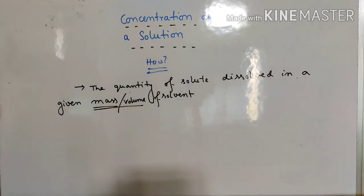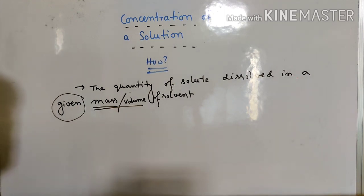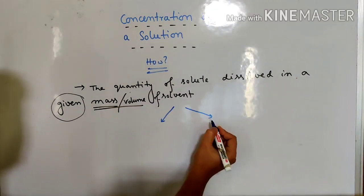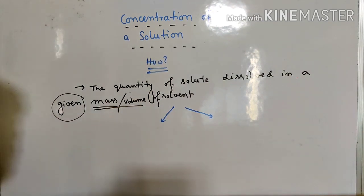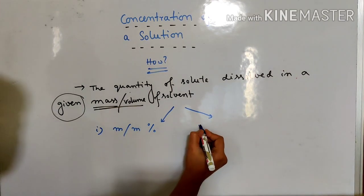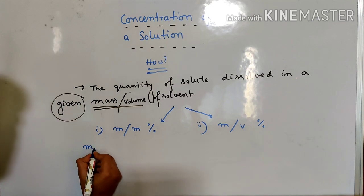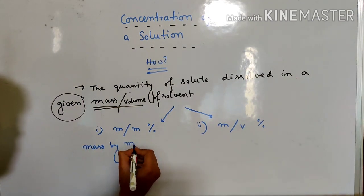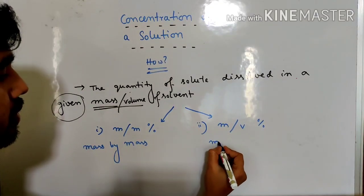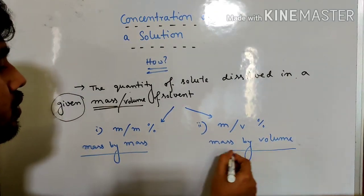Now, given mass — that is very important — that means we take a particular amount of mass of the solvent or the volume of the solvent. There are two types. At this level, class 9, we are only going to discuss about two types. One is mass by mass percentage and the second one is mass by volume percentage. So we are going to discuss about mass by mass and mass by volume.